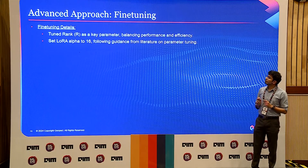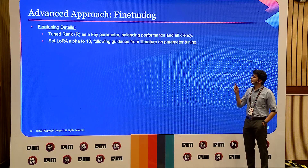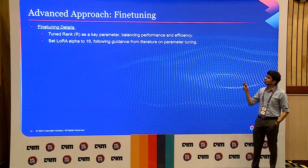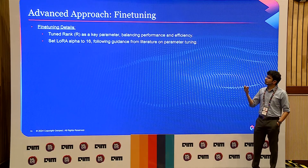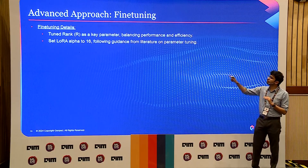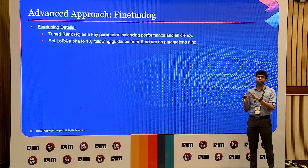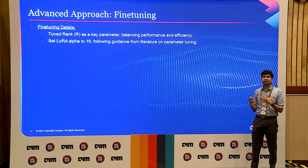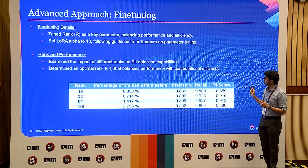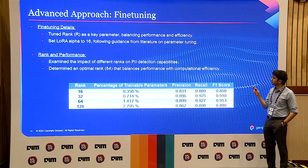Coming to the fine-tuning details: we use the rank R of the delta W update as a parameter and kept alpha as 16 as a constant, as the literature recommends. You can look at it as alpha divided by R being the factor by which the weights are updated. We only kept R as one variable and learning rate as the other. If you use learning rate, alpha, and R together, that just compounds the effect of your fine-tuning, and you don't want the model to lose its earlier learning. Overall, around rank 64 on the validation dataset, we saw good results.